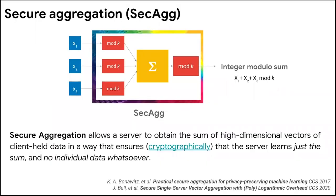This whole thing can be done in secure enclaves or trusted execution environments to give remote attestation power to the clients that the protocol is indeed being followed. Let's talk about one such specific technology known as secure aggregation, which Google researchers helped develop along with many academic and other researchers. Secure aggregation is a cryptographic protocol — a multi-party computation protocol that allows the server to obtain the sum of high-dimensional vectors, which are representations of the model updates that clients are sending back to the server.